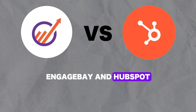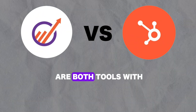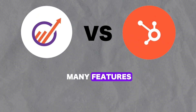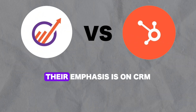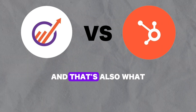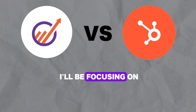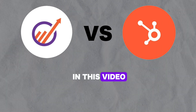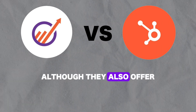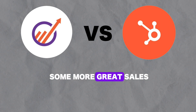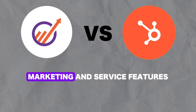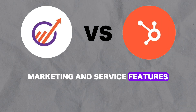First, it's important to go over what these tools do exactly and who they're for. EngageBay and HubSpot are both tools with many features. Their emphasis is on CRM, and that's also what I'll be focusing on in this video, although they also offer some more great sales, marketing, and service features.